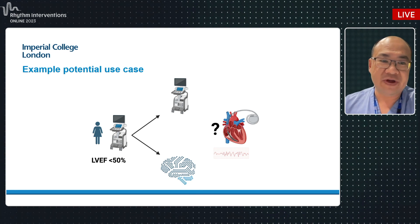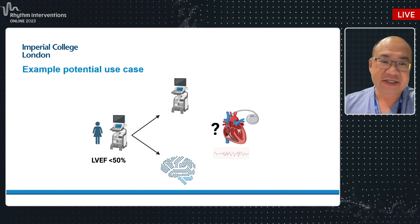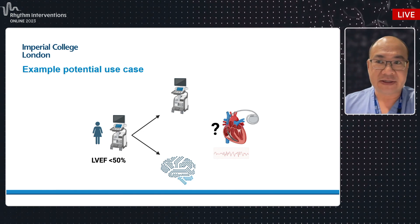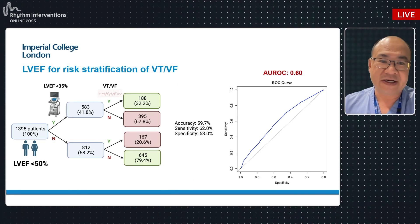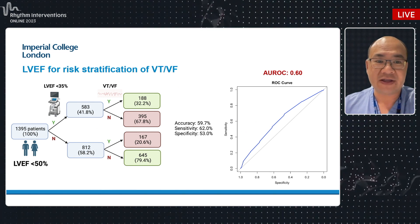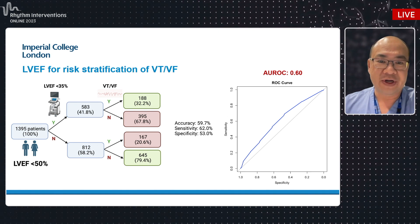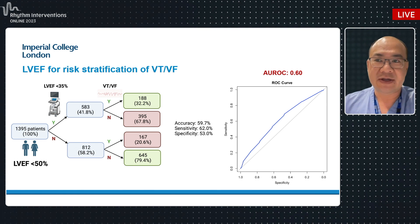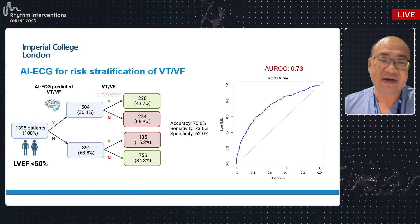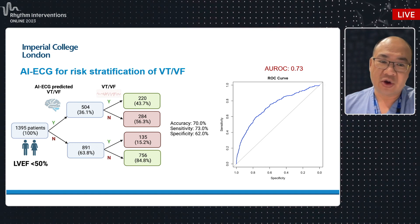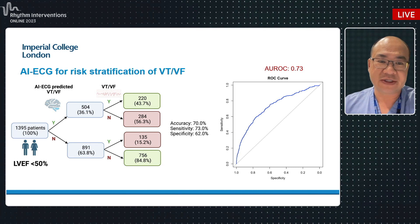As a use case, as electrophysiologists we are keen to risk-stratify patients at risk of ventricular arrhythmias for ICD implantation. In 2023 we're still using echocardiographic LVEF measurement — using an LVEF of 35% in this cohort gives a pretty dismal AUROC of 0.6. With a single ECG, we're able to better identify individuals at higher risk of ventricular tachyarrhythmias over a 10-year horizon, achieving an AUROC of 0.73.